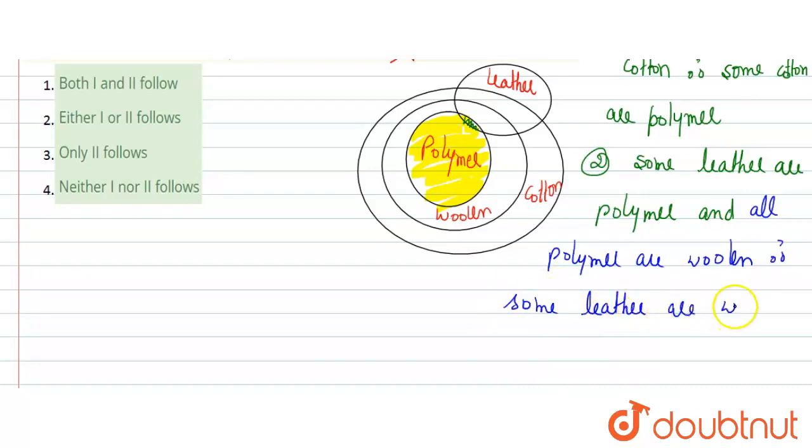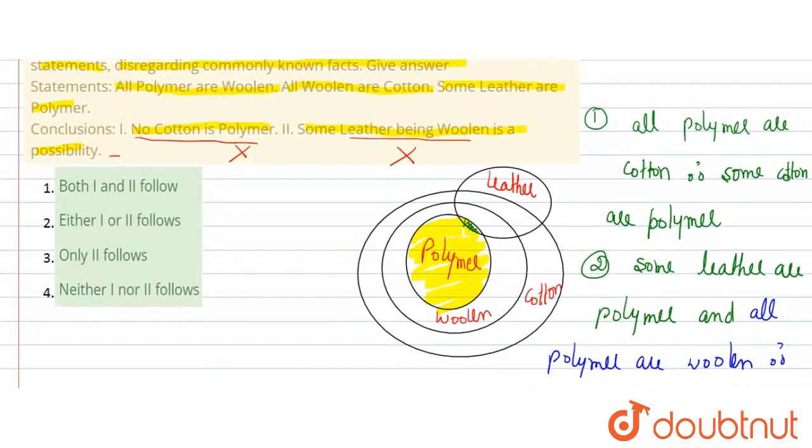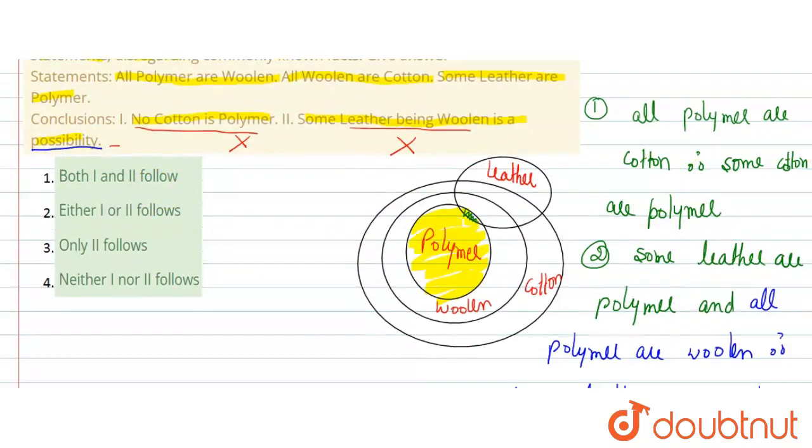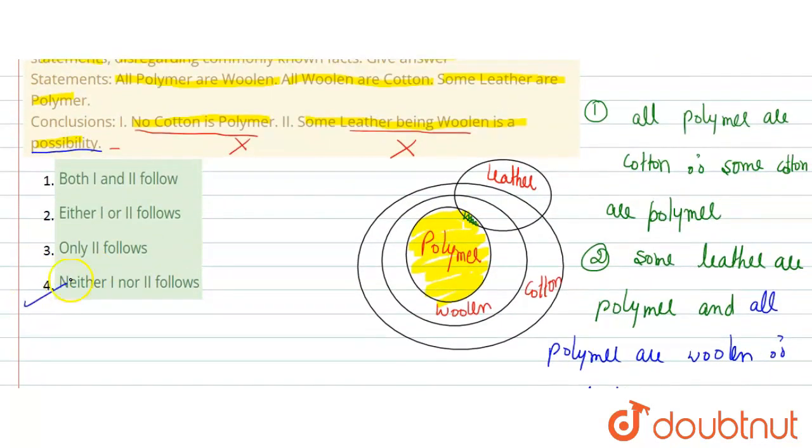Kuch leather mere definitely woolen hai. Toh jab koi definitely woolen hai, definitely koi cheez exist kar rahi hai, toh phir uski possibility nahi aayegi. Possibility tabhi exist karti hai jab koi cheez definitely nahi hota. Lekin yaha par definitely kuch leather were woolen hai, toh isliye second bhi wrong ho gaya.